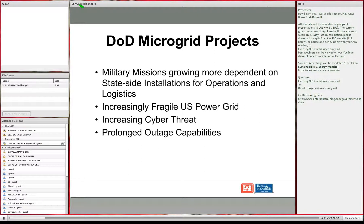The rationale and drivers behind microgrids and DOD initiatives begin with the fact that military missions today—whether overseas or contingency operations—are very reliant on stateside installations for operations and logistics. Whether it's unmanned aerial vehicles, intelligence gathering, or communications networks, personnel in Afghanistan rely on people in the United States to support their daily activity.